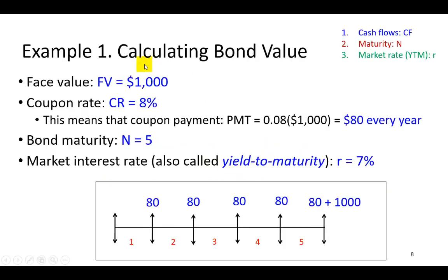So in this first example, we have this bond with a face value of $1,000 and a coupon interest rate of 8%. Remember, coupon rate is what determines the fixed interest payments that you're going to be receiving every period. In this case, it's going to be 8% of $1,000. Here's a calculation, and it comes out to be $80 every year.